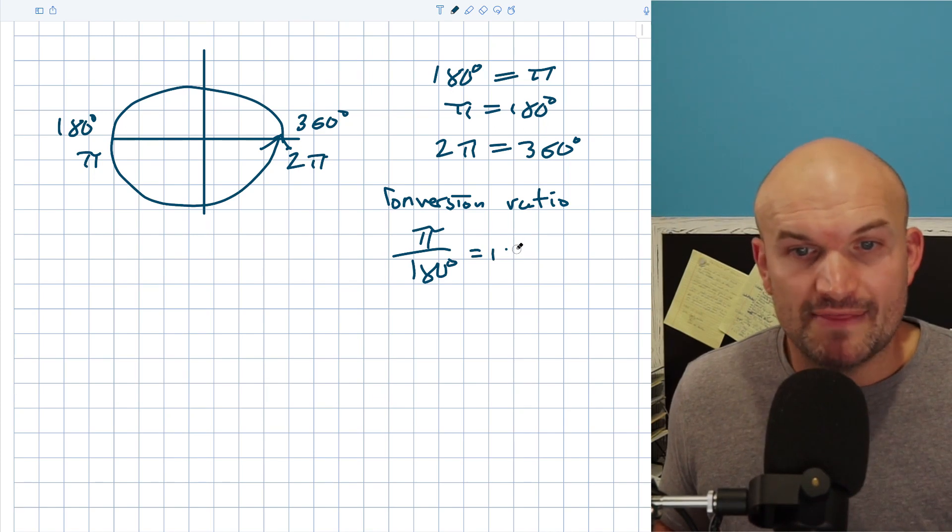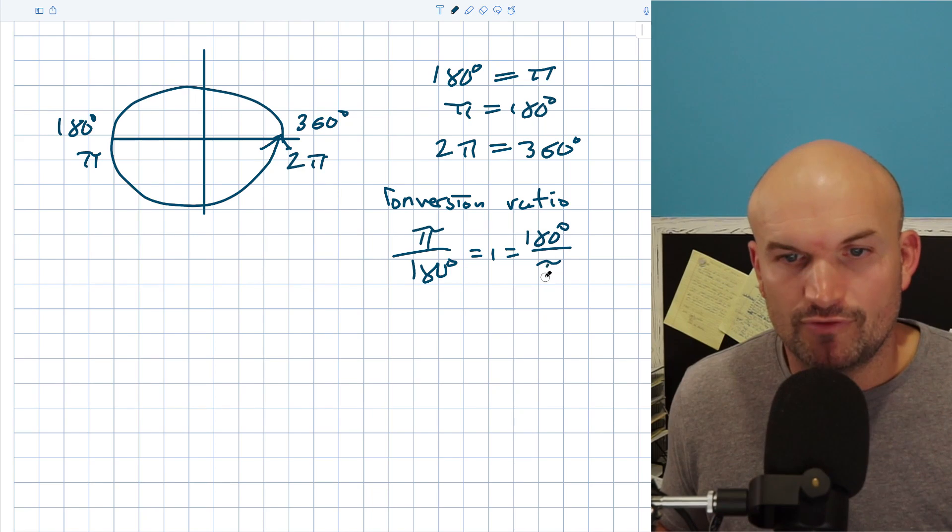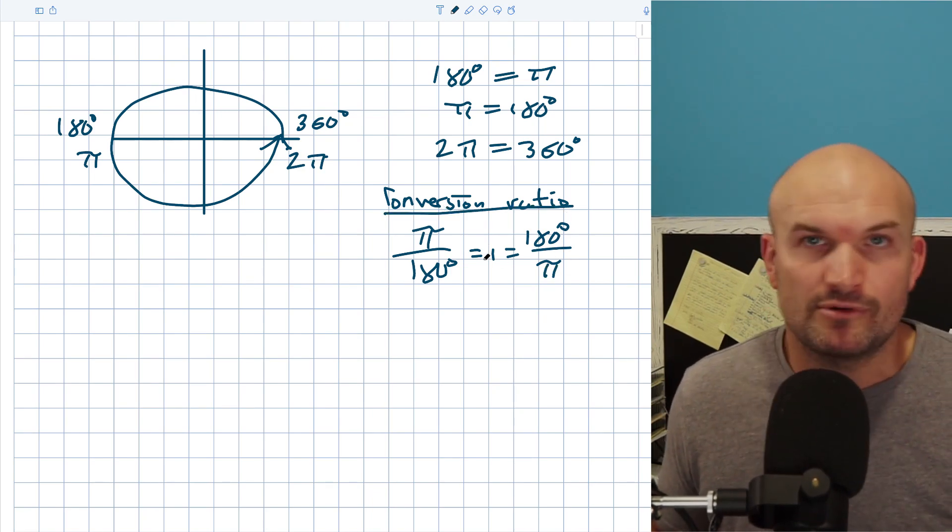So I can write this as π over 180 degrees. Now that's equal to one. And that's also, one is also equal to 180 degrees all over π. So this is going to be our conversion ratio. These are what you're going to remember.